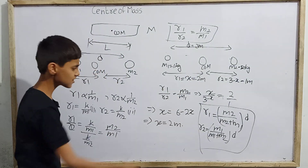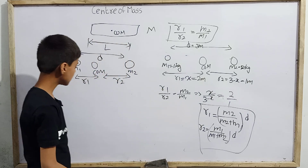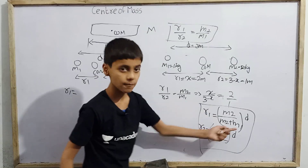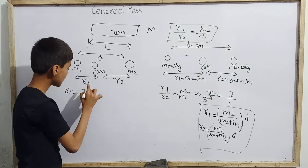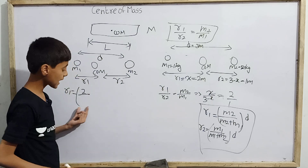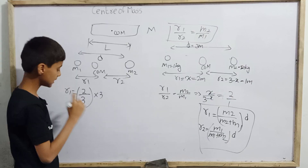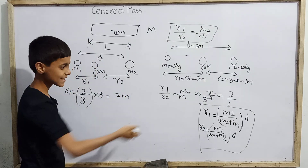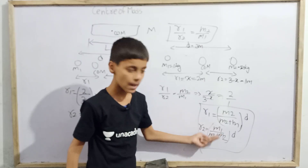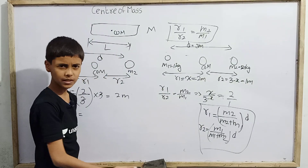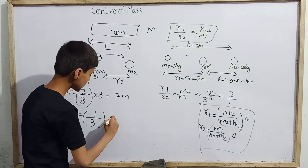Let us verify using these equations. r1 equals m2 by (m2 plus m1) times d. Substituting: m2 is 2, m2 plus m1 is 2 plus 1 equals 3, and d is 3. So r1 equals 2/3 times 3, and the 3's cancel, giving r1 equals 2 meters.